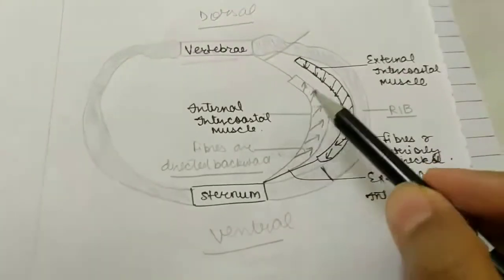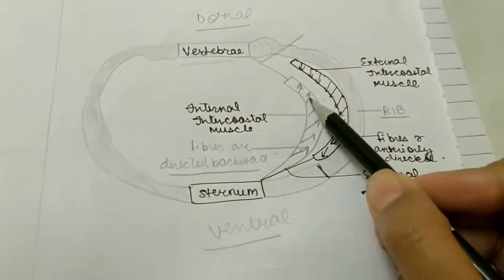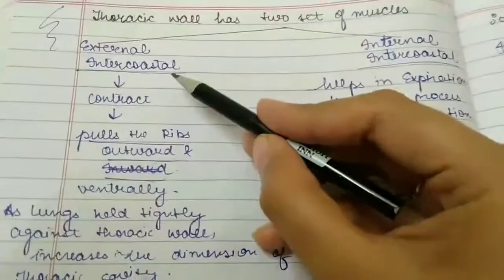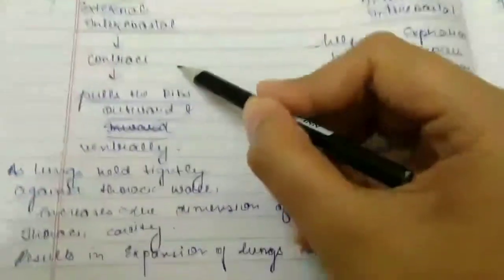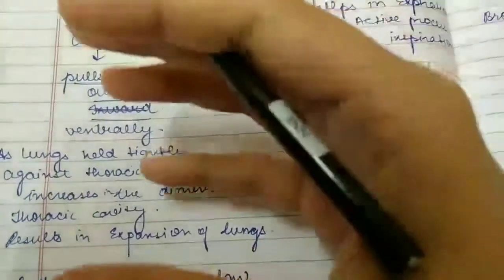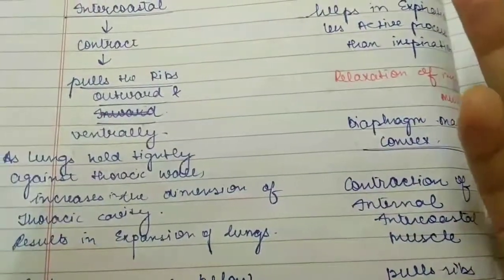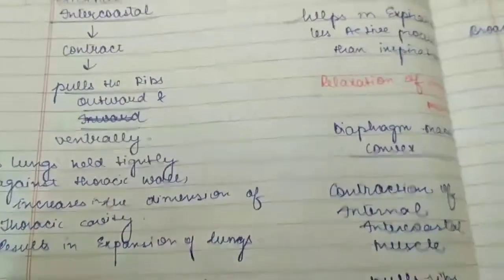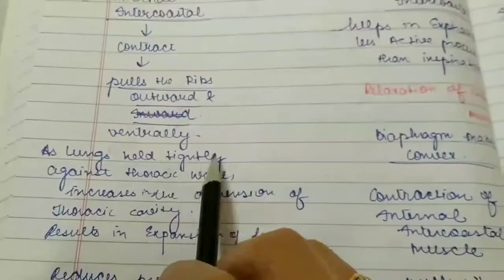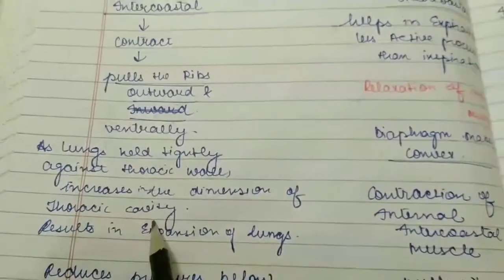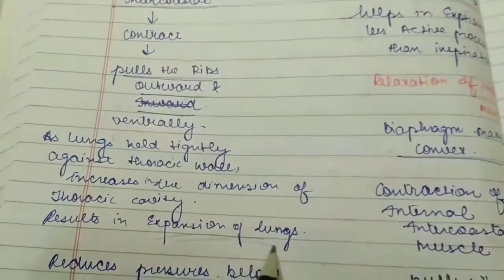The fibers of internal intercostal muscles are directed this way. If we're talking about the external intercostal muscle, when they contract, they pull the rib outwards. The volume will increase, pressure will decrease, hence inspiration takes place. As the lungs are held tightly against the thoracic cavity, increases in the dimension of thoracic cavity result in expansion of lungs.